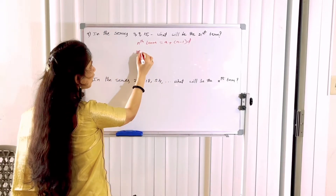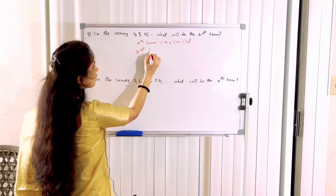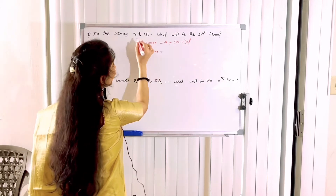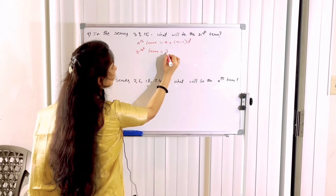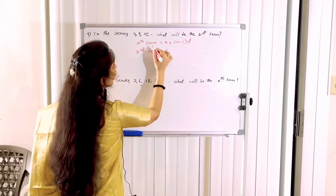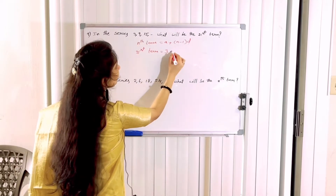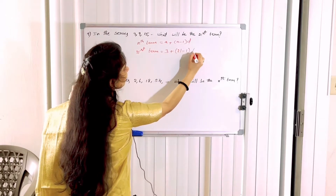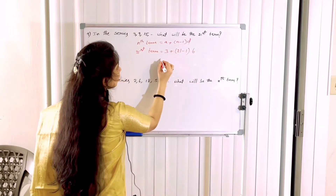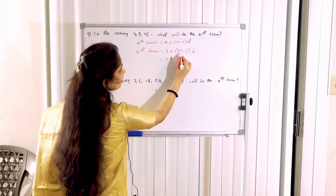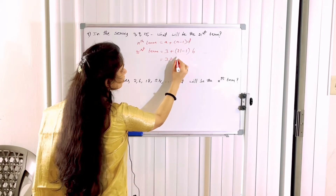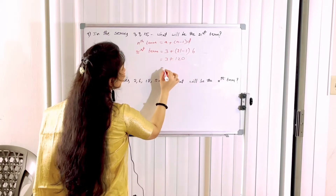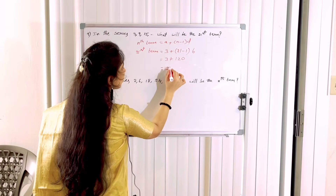We need the 21st term. So N = 21, A = 3 (first number), and D = 6 (difference). Simplification: 20 × 6 = 120. So the 21st term = 3 + 120 = 123.